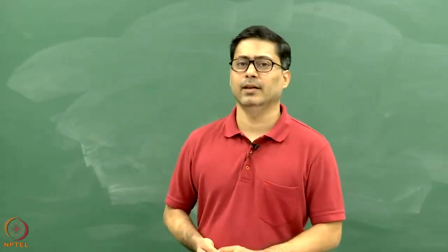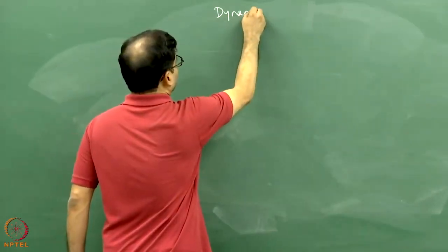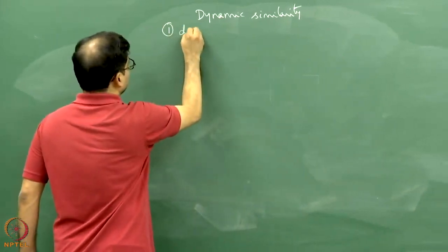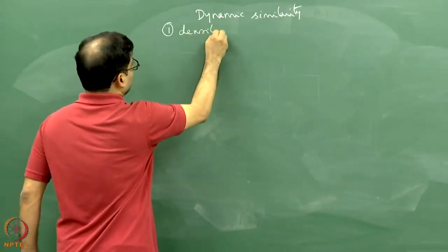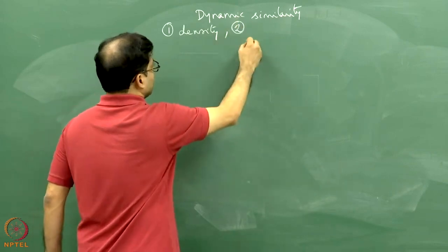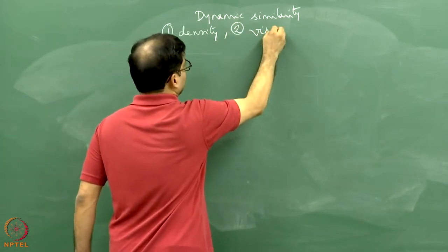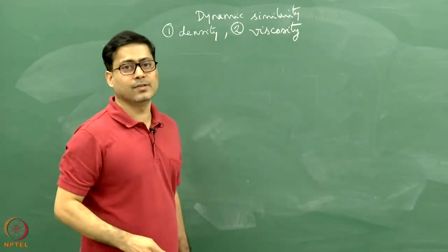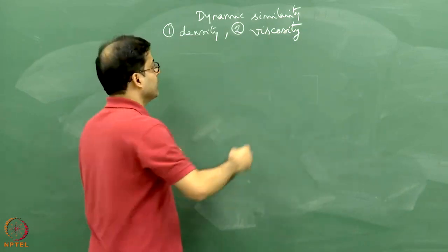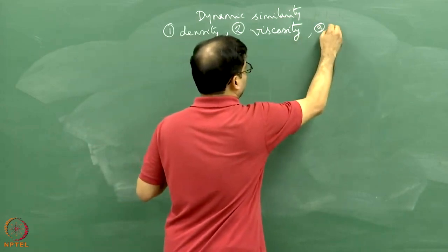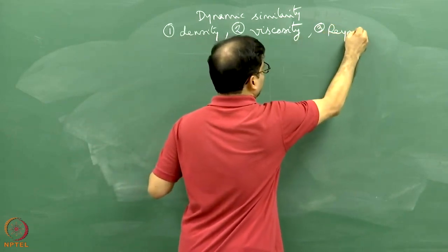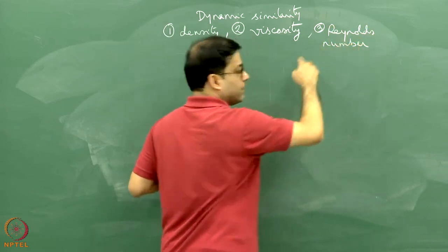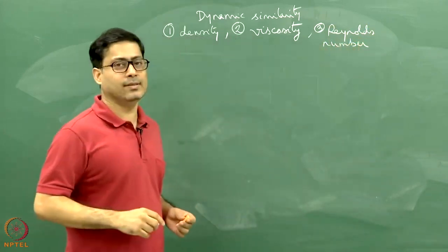In dynamic similarity there are four issues. What are those issues? Number one, the issue of density. Number two, the issue of viscosity. That is why I introduced to the geology students what is viscosity. Here you see the term has come.